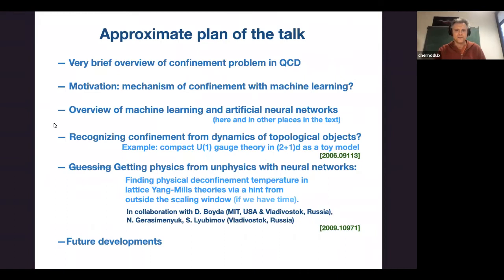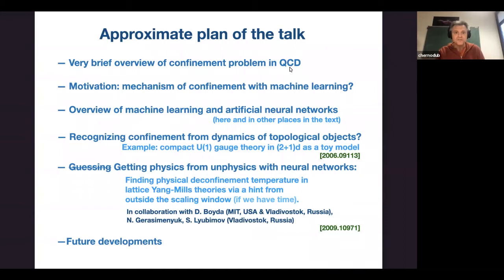The approximate plan of this talk is: first, I would like to describe why we need machine learning in field theory and high energy physics. I will speak about QCD, where we have a big problem with understanding confinement and the phase diagram — that will be the motivation. Then I will describe machine learning and artificial neural networks in a general way.